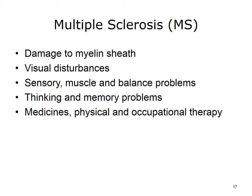Multiple sclerosis, or MS, is a nervous system disease that affects your brain and spinal cord. It damages the myelin sheath, the material that surrounds and protects your nerve cells. This damage slows down or blocks messages between your brain and your body. Symptoms can include visual disturbances, muscle weakness, trouble with coordination and balance, sensations such as numbness and prickling, and thinking and memory problems. The cause of MS is unknown. MS affects women more than men and usually begins between the ages of 20 and 40. There is no cure, but medicines may slow it down and help control symptoms. Physical and occupational therapy may also help.